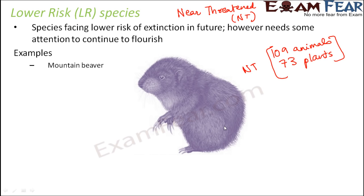All plant and animal species categorized under threatened species — whether vulnerable, lower risk, critically endangered, or endangered — need attention. At any cost we do not want their numbers to reduce drastically; their populations should either continue to increase or remain stable.